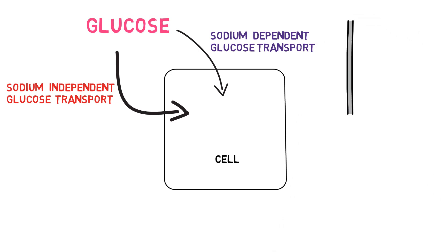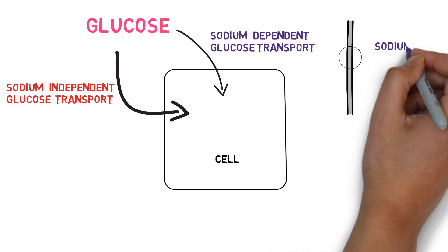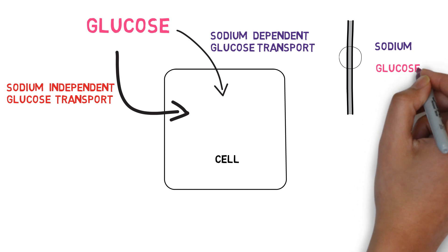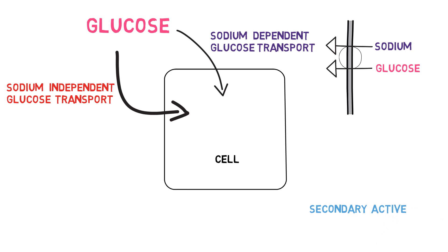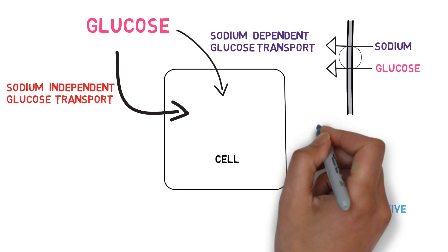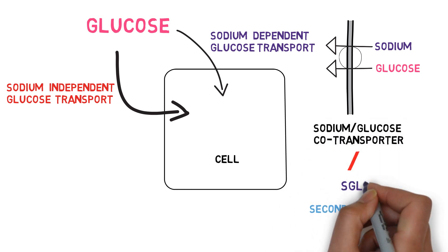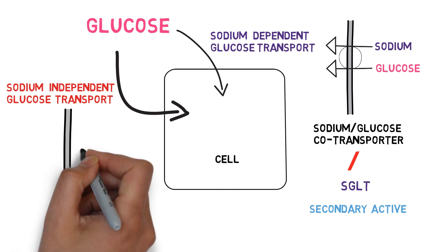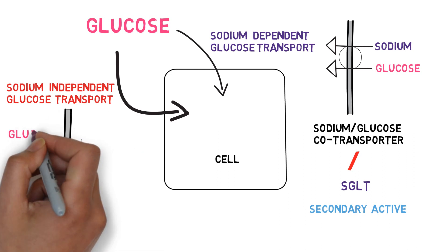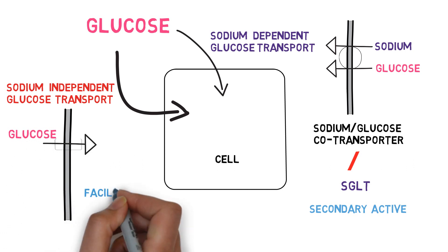In the sodium-dependent glucose transport system, both a sodium ion and a glucose molecule are transported into the cell simultaneously by a secondary active transporter called the sodium-glucose co-transporter, or SGLT. In the sodium-independent glucose transport system, glucose is transported inside the cell via facilitated diffusion through GLUT.